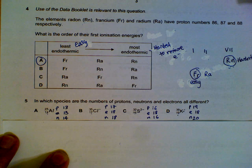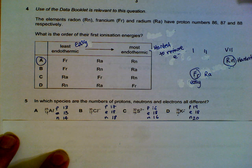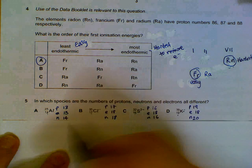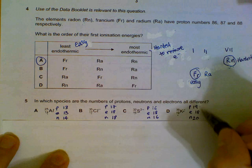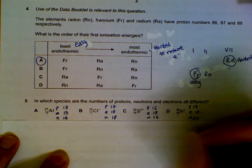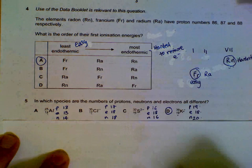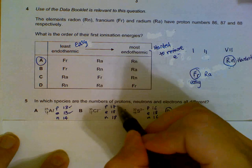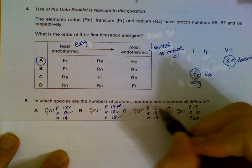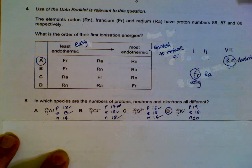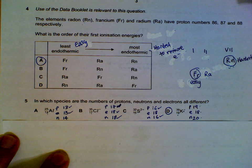They are asking in which species are the numbers of protons, neutrons, and electrons all different. For potassium: 19 protons, 18 electrons, 20 neutrons — all three are different. The rest have two of the three values being the same, which is not what we want. So the answer is D.